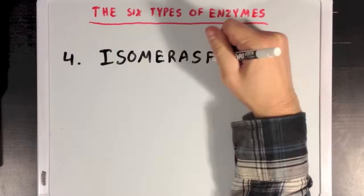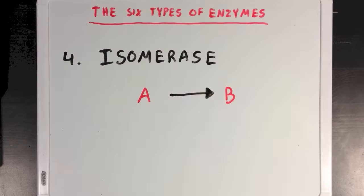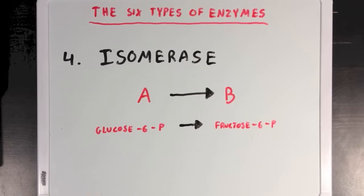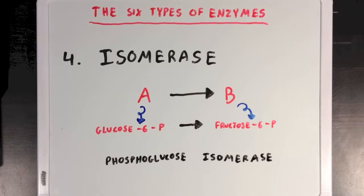Next, we have the isomerase group. And enzymes in this group are typically involved in reactions where a molecule like molecule A is being converted to one of its isomers. And an example of this type of a reaction is the conversion of glucose 6-phosphate to fructose 6-phosphate, which is one of the steps of glycolysis that you may remember. Now, this reaction is catalyzed by an enzyme called phosphoglucose isomerase, which is appropriately named since it creates isomers of glucose molecules that are phosphorylated.